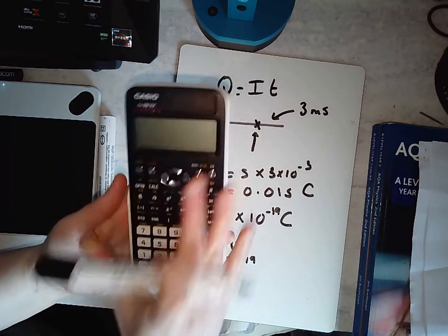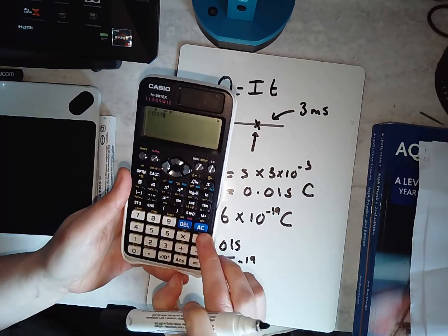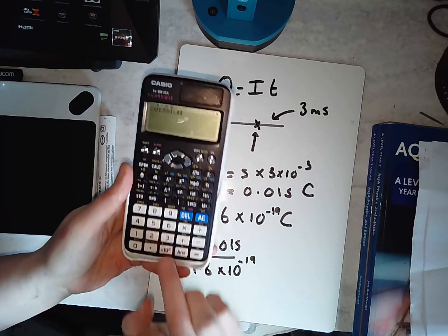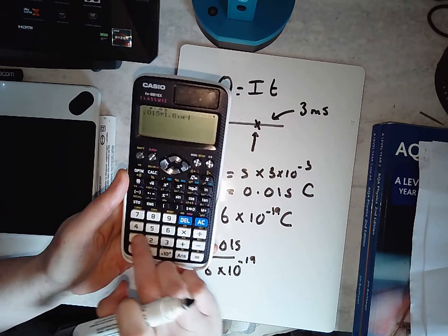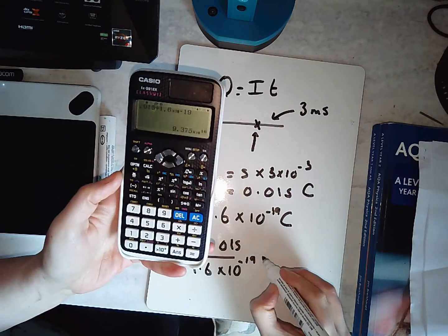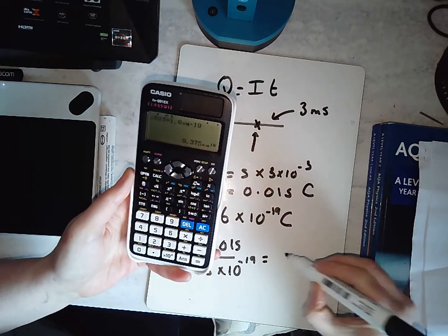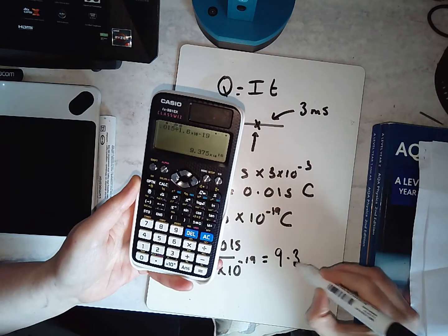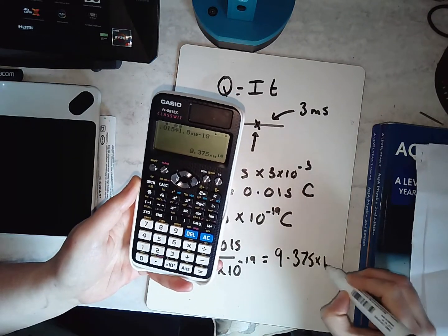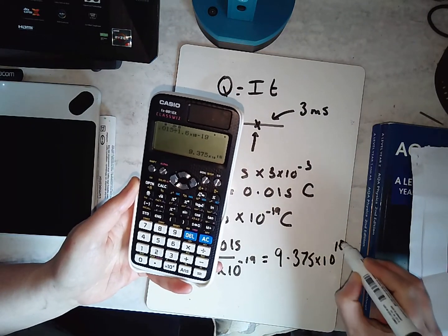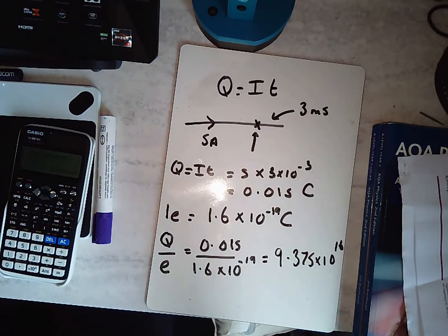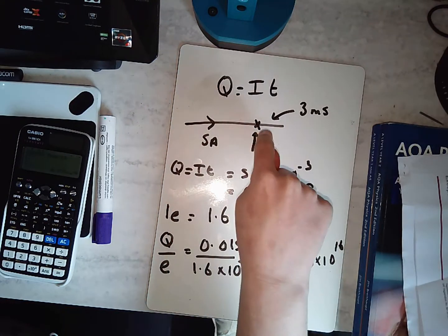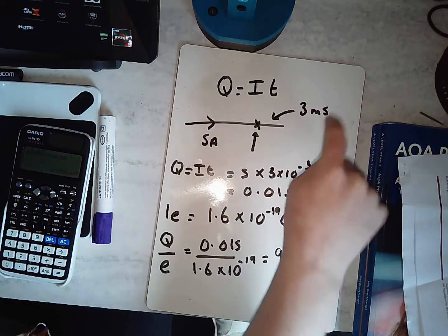So I'm going to have 0.015 over 1.6 times 10 to the minus 19. I'll put this into my calculator: 0.015 divided by 1.6, using the exponent button for times 10 to the minus 19. It's telling me that in these 3 milliseconds, 9.375 times 10 to the 16 electrons are passing this point.